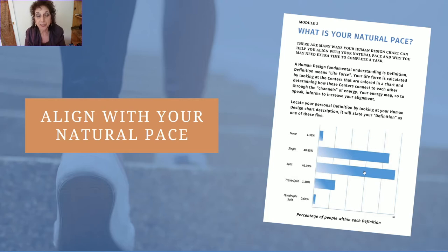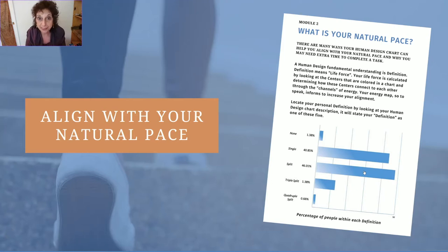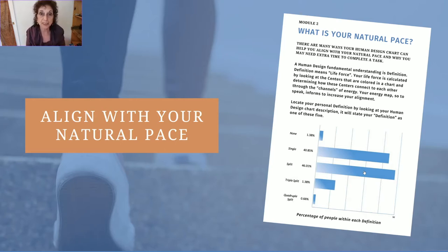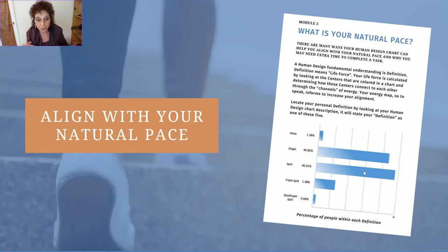If you have your chart in front of you, you'll see somewhere on the descriptors where it says type and inner authority. It'll say definition, and next to it, it'll either say none or single definition, split definition, triple split, and so forth. What we mean by definition is life force. As an analyst, when we look at someone's chart, we look at what are the squares and triangles that are colored in, and how do they connect to each other — is there one single connection point, two, three, four, or none?